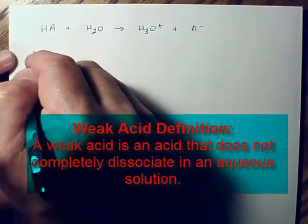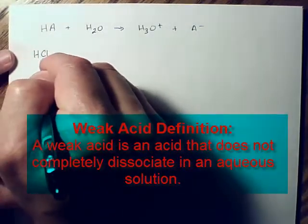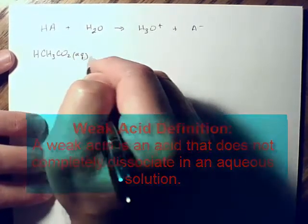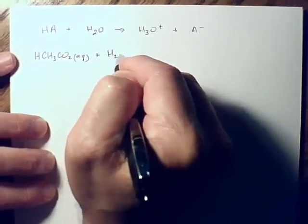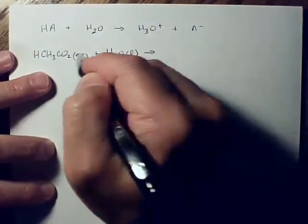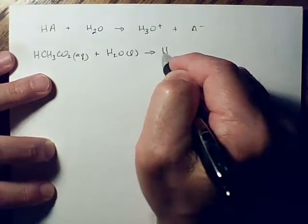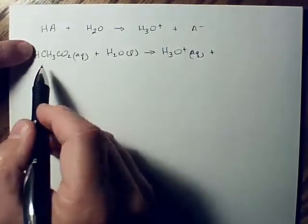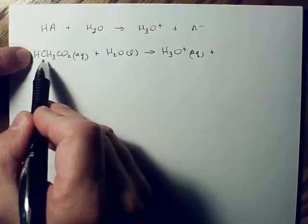Let's look at acetic acid. Here's acetic acid. So we're going to put acetic acid in water. Here's our water molecule. Here we're going to make the hydrogen come off and join up with the hydronium ion.